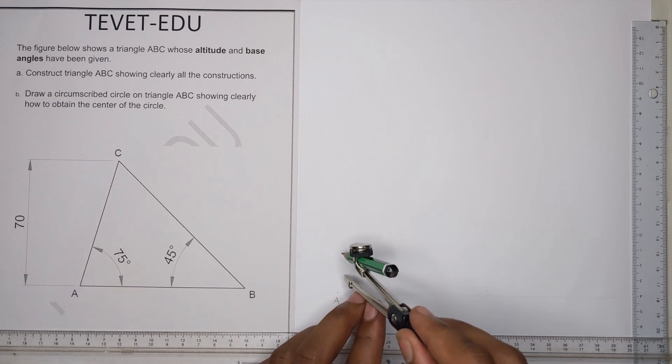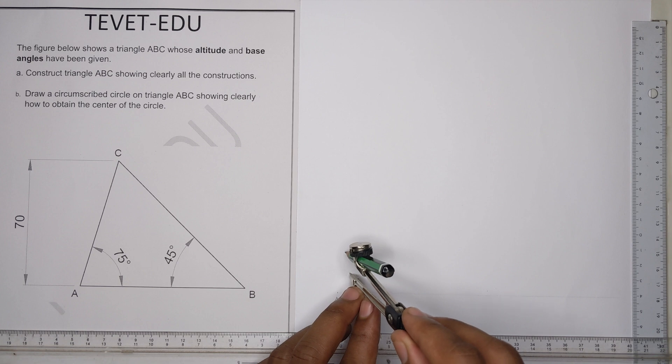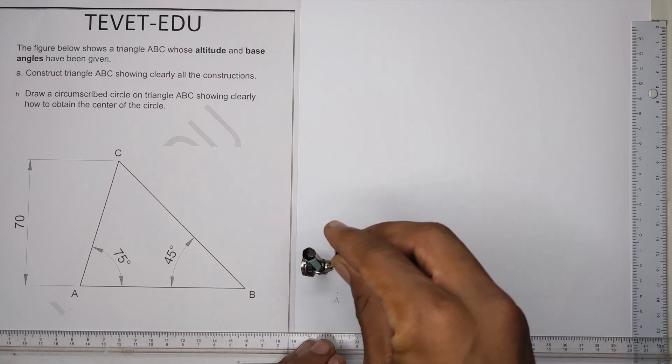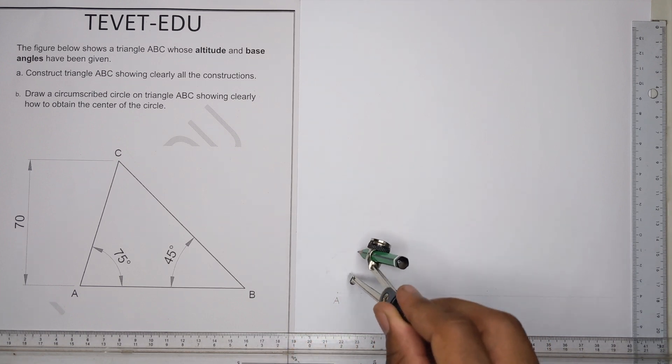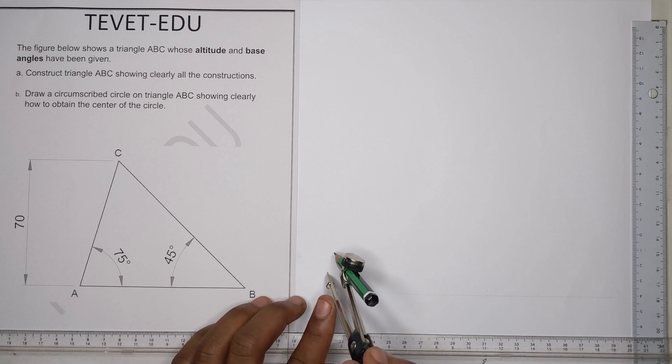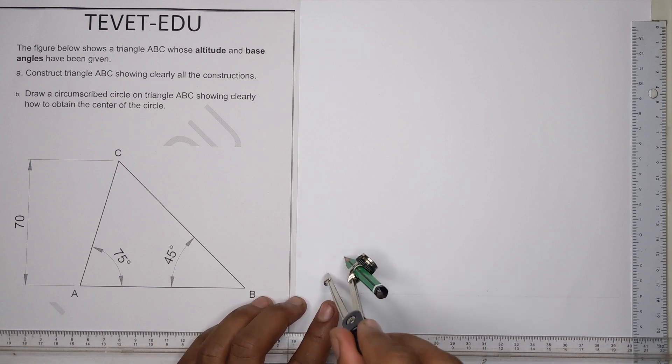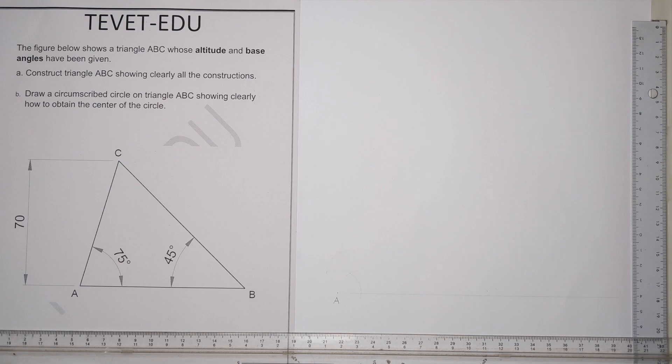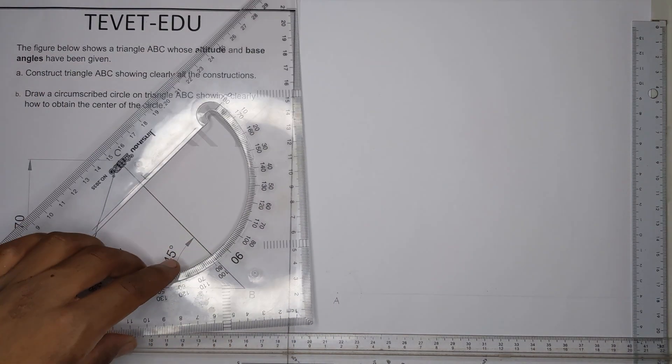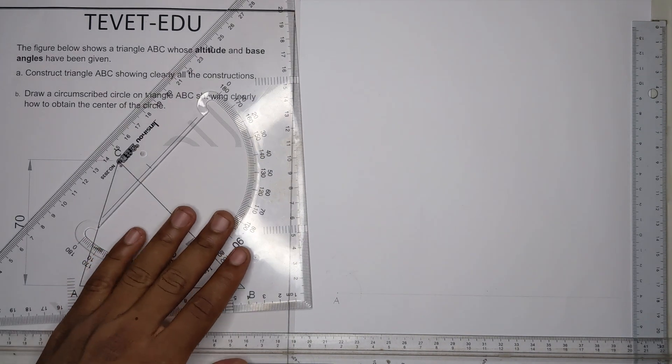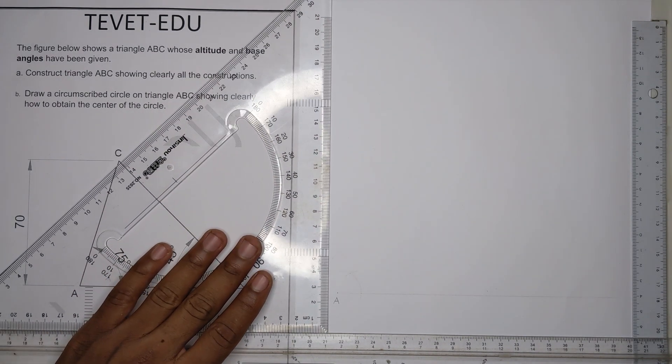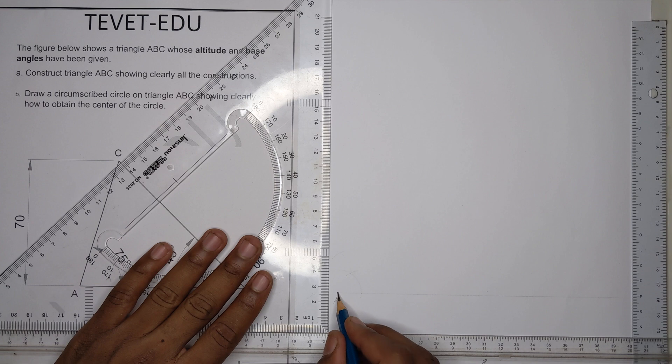You strike an arc, then you make 60, then 120, and then 90 degrees like that. Draw your 90 there.